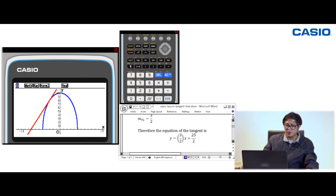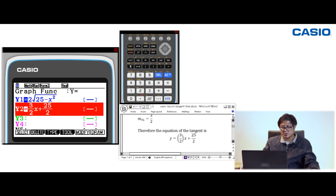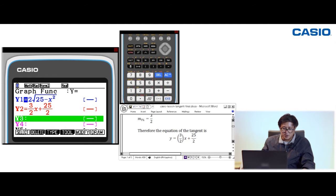Actually, there's an easier way to get the equation of the red line without going to the Run Matrix mode and manually solving. Although we know the answer is y = (3/2)x + 25/2 or 1.5x + 12.5, the CG50 has a special feature to get the equation of the tangent line to a curve at any point. Let's deselect Y2.